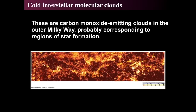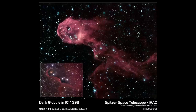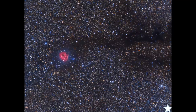Looking at dark globules — Bok globules named after Bart Bok — here's another example of a dark dust cloud with a hot H II region sitting in the middle of it. This is what we're looking at with the interstellar medium. Next time we'll look at all aspects of the interstellar medium and exactly how stars form from it — protostars and giant molecular clouds.